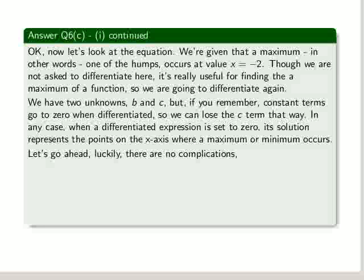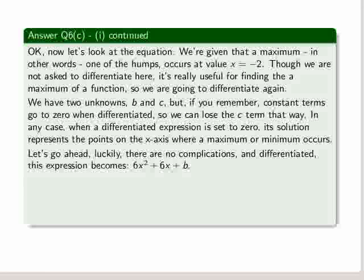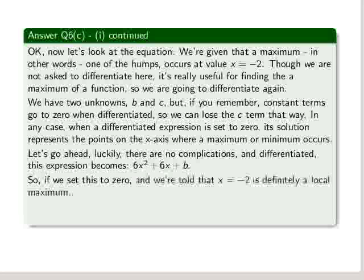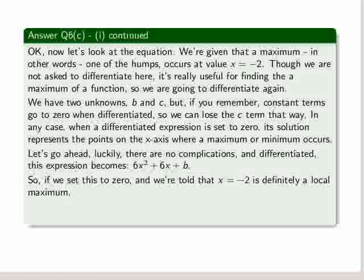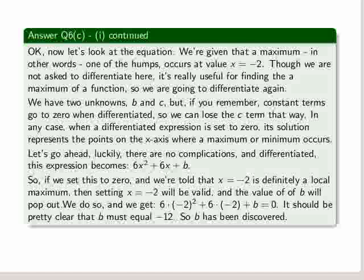Let's go ahead. Luckily, there are no complications, and differentiated, this expression becomes 6 times x squared plus 6 times x plus b. So if we set this to zero, and we're told that x equals minus 2 is definitely a local maximum, then setting x equal minus 2 will be valid, and the value of b will pop out. We do so, we plug in minus 2, and we get that expression, and it should be pretty clear that b must equal minus 12. So b is being discovered.